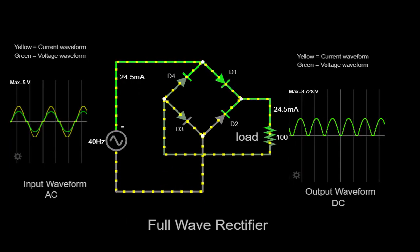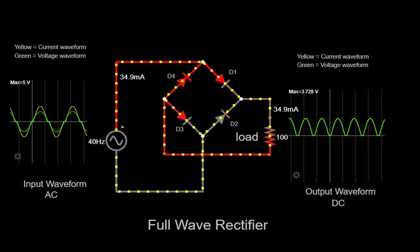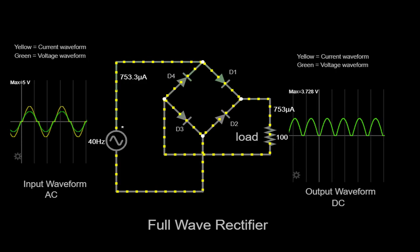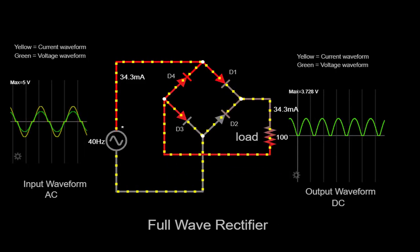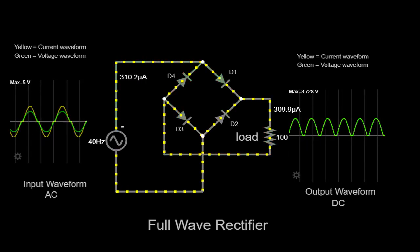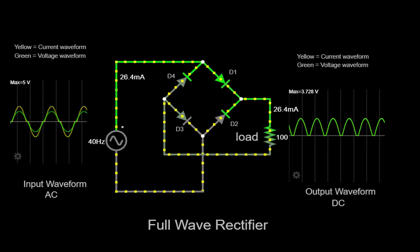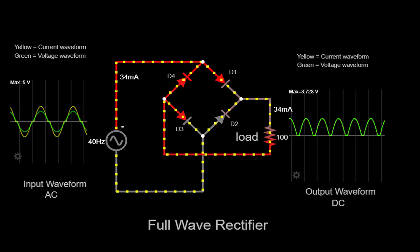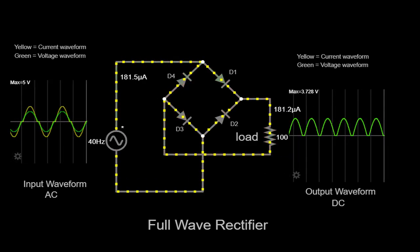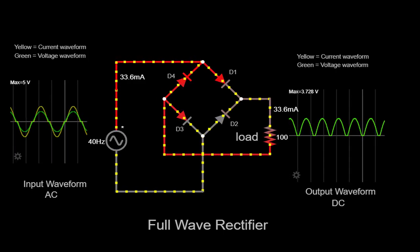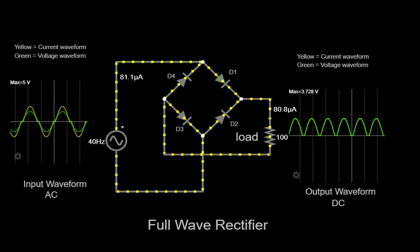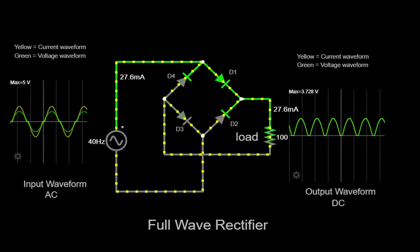And there you have it, the detailed inner workings of a full-wave rectifier. We've explored how it converts alternating current into a smoother direct current using a bridge rectifier circuit and four diodes. By rectifying the AC input, we obtain a more constant and usable voltage for various electronic devices. This process is crucial in powering electronic circuits and devices that rely on a steady DC power source.